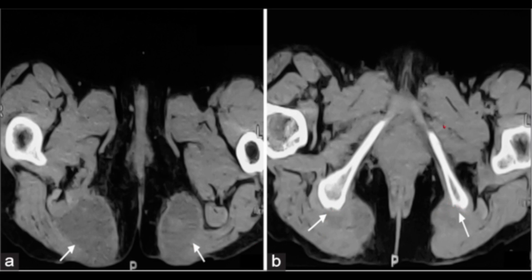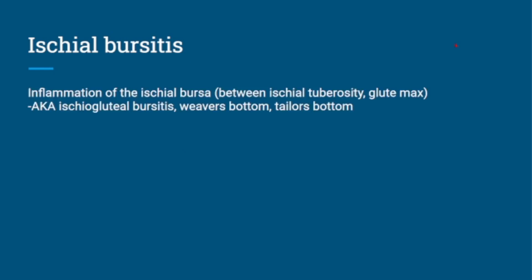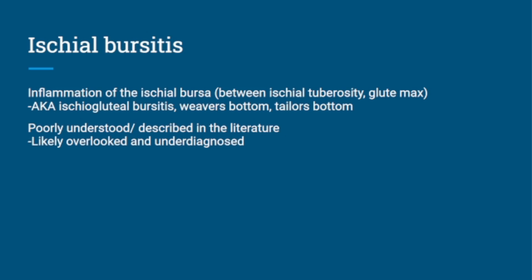Let's talk about ischial bursitis. It's inflammation of the ischial bursa, which is located between the ischial tuberosity and the gluteus maximus. It's also called ischial gluteal bursitis, weaver's bottom, or tailor's bottom — those names come from some of the occupational risks. It is not well understood or described in the literature, and the epidemiology is not really known.